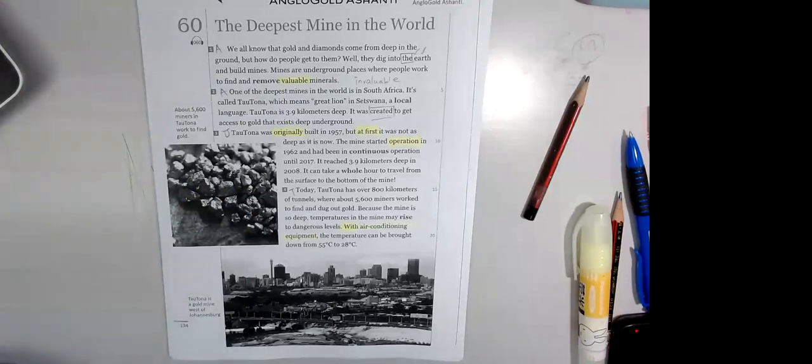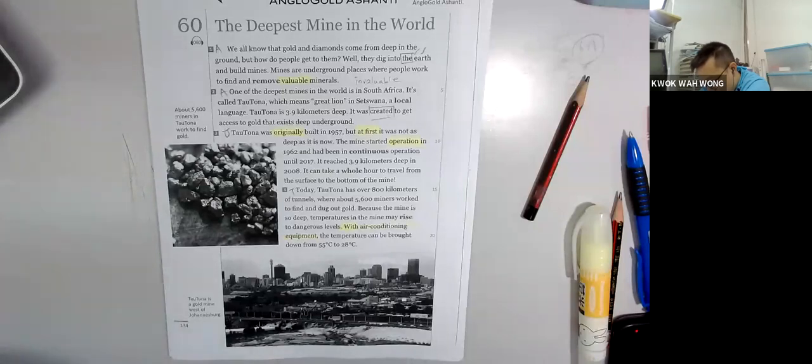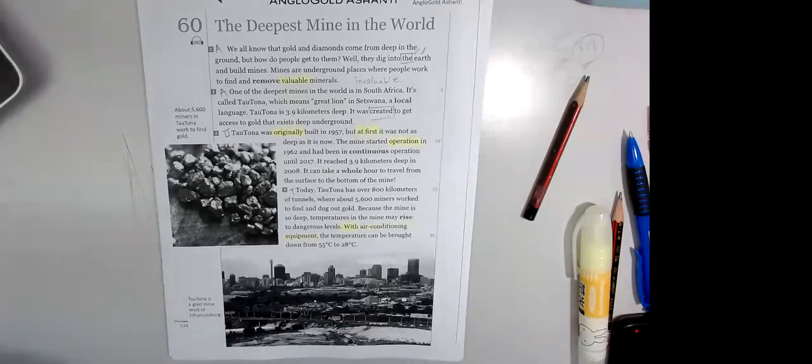It's called Taotonga, which means Great Lion in Setswana, a local language. Taotonga is 3.9 kilometers deep. It was created to get access to gold that exists deep underground.